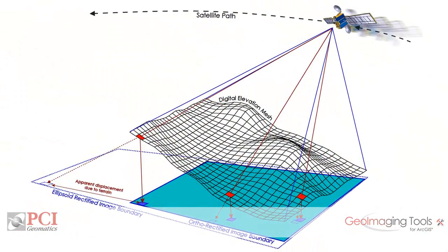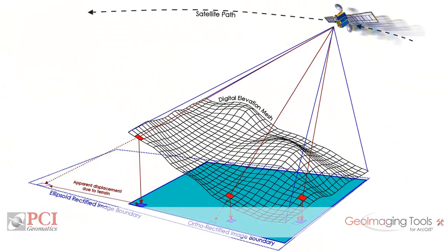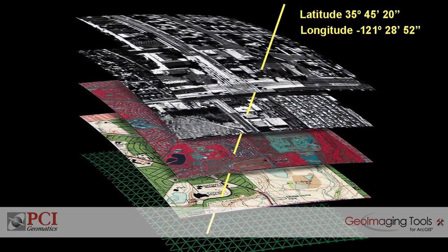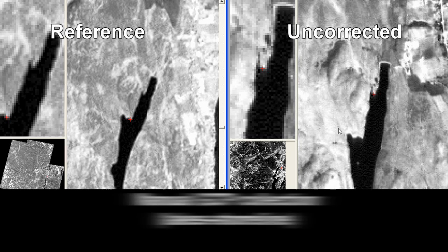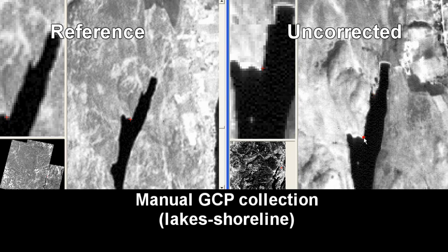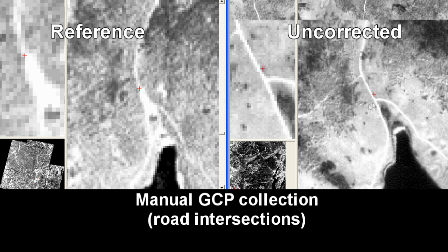Producing ortho-corrected imagery is needed to integrate the data seamlessly into your GIS workflow. Manually correcting the data is time-consuming and often yields inaccurate results despite hours spent collecting good ground control.